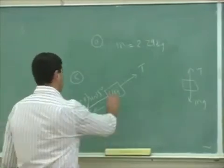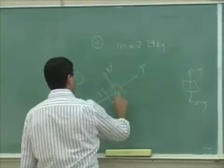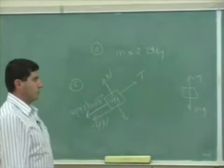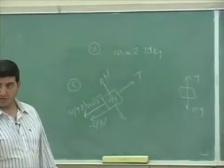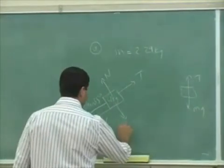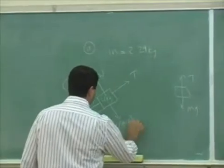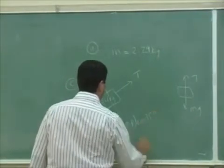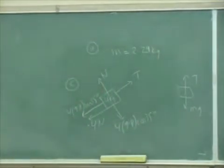But what is the N? Well, the N is this direction. And the N equals to 4 times 9.8 times cosine 35.